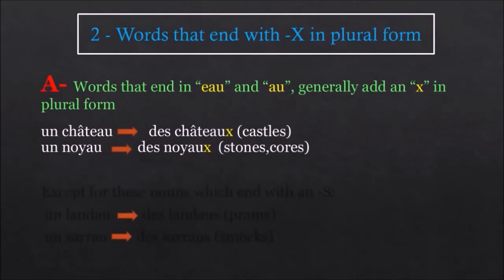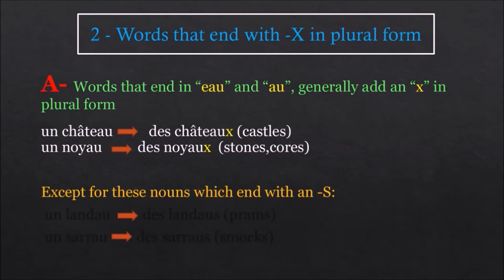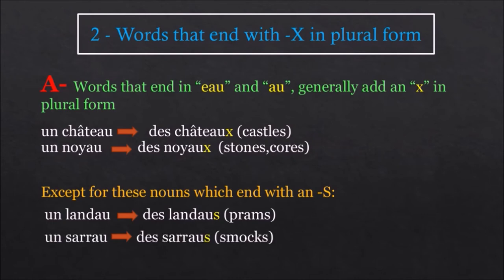Words that end in E-A-U and A-U generally add an X in the plural form. For example, un château, des châteaux. Un noyau, des noyaux. Except for these nouns which end with an S. Un landau, des landaus. Un sarro, des sarros.